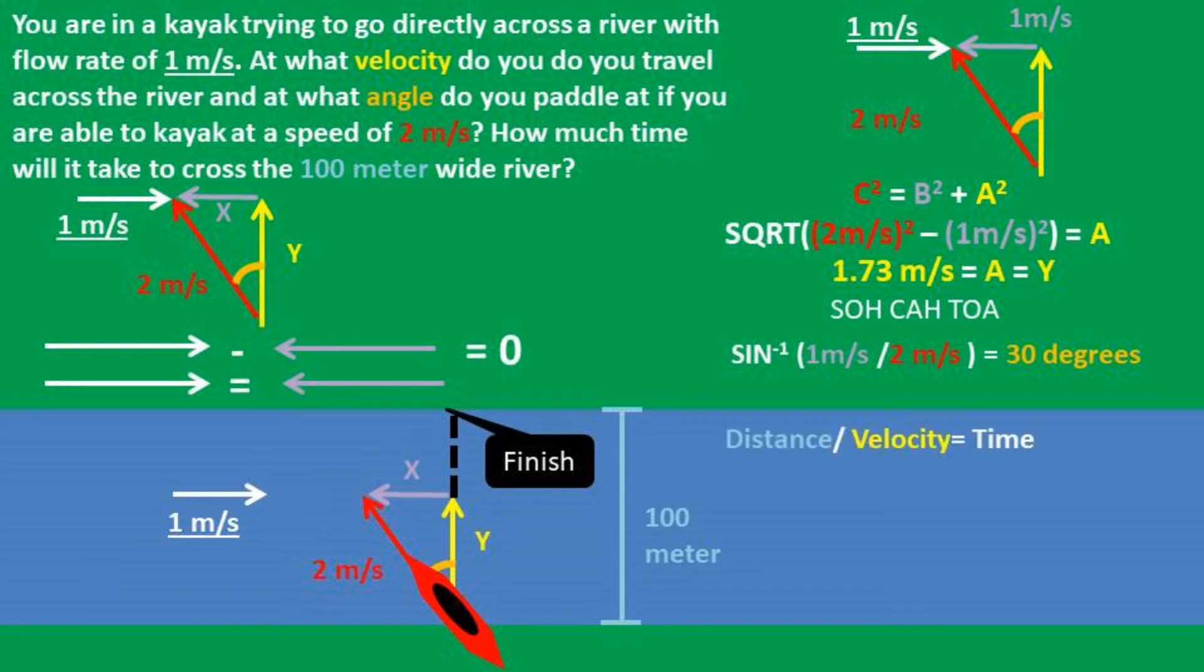Now we can solve for how long it will take to cross the river. We can take the distance over the velocity perpendicular to the flow rate, which in this case is the y velocity, to get the time it takes to get across the river.